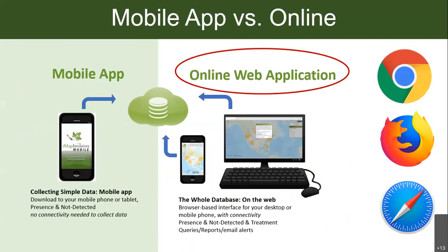We're going to start with the online web application because that's how you set up your account so that you can use the mobile app. You should use Chrome or Firefox. If you're on an iPhone, your default browser might be Safari, so you can use that in that case. These three browsers work best — browsers like Microsoft Edge or Explorer don't work as well.